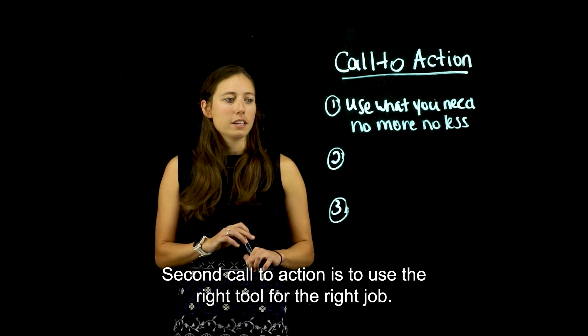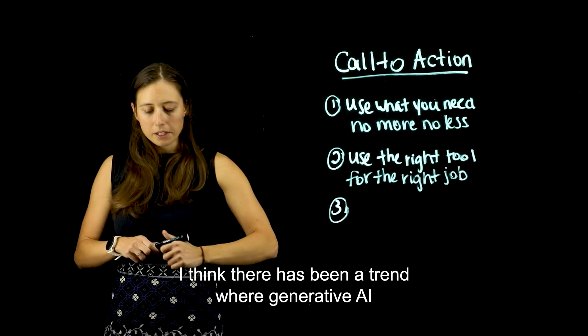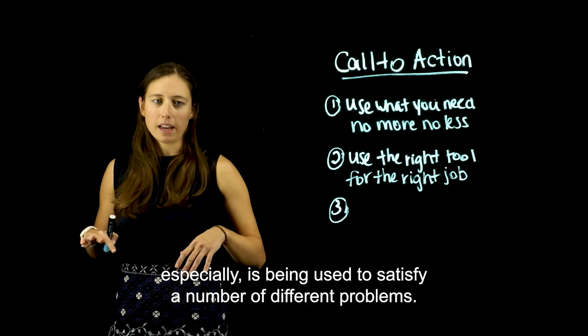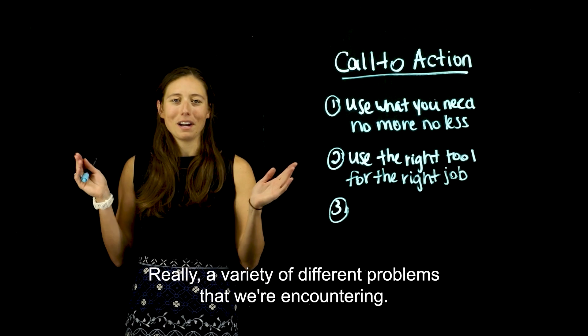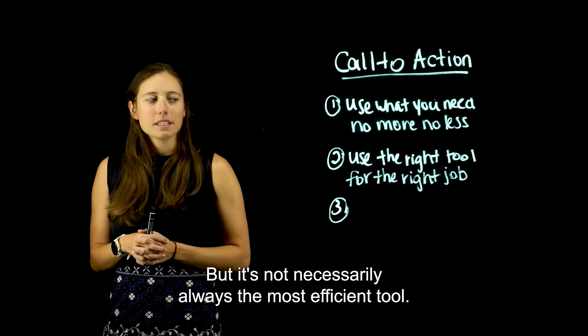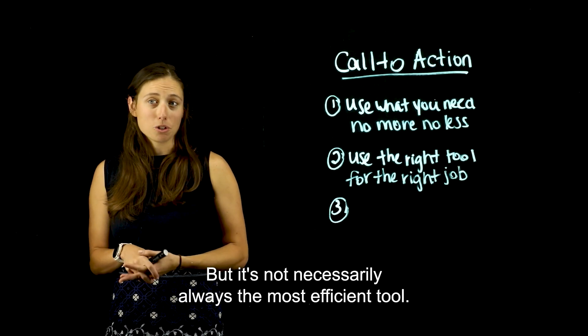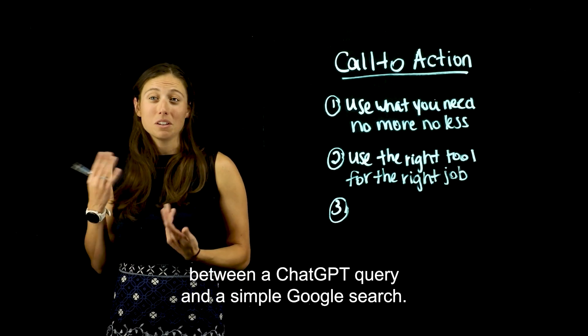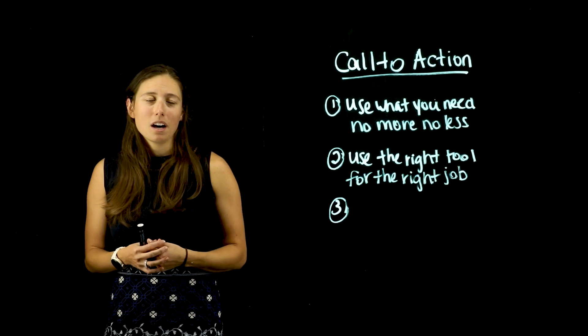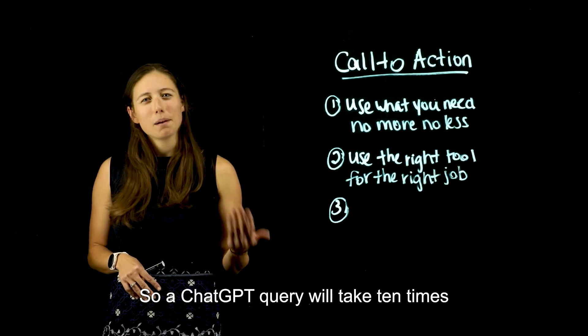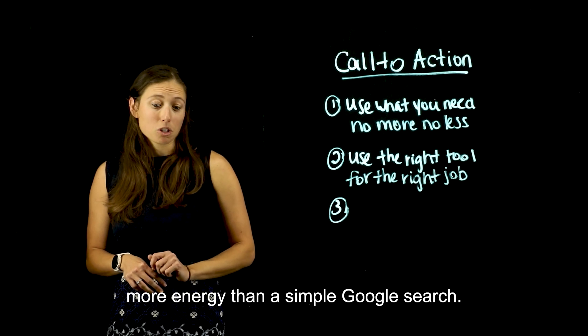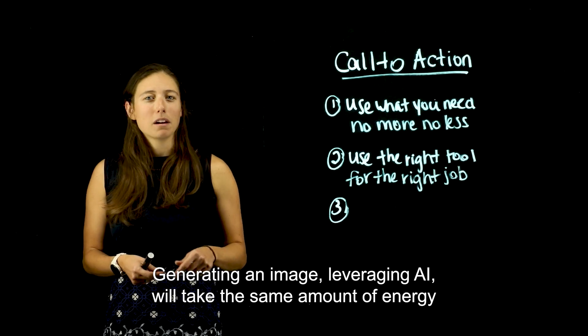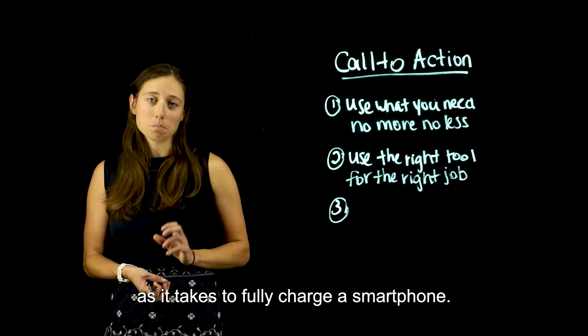Second call to action is to use the right tool for the right job. I think there has been a trend where generative AI especially is being used to satisfy a number of different problems, really a variety of different problems that we're encountering, but it's not necessarily always the most efficient tool. So take, for instance, the difference in energy usage between a ChatGPT query and a simple Google search. So a ChatGPT query will take 10 times more energy than a simple Google search. Generating an image leveraging AI will take the same amount of energy as it takes to fully charge a smartphone.